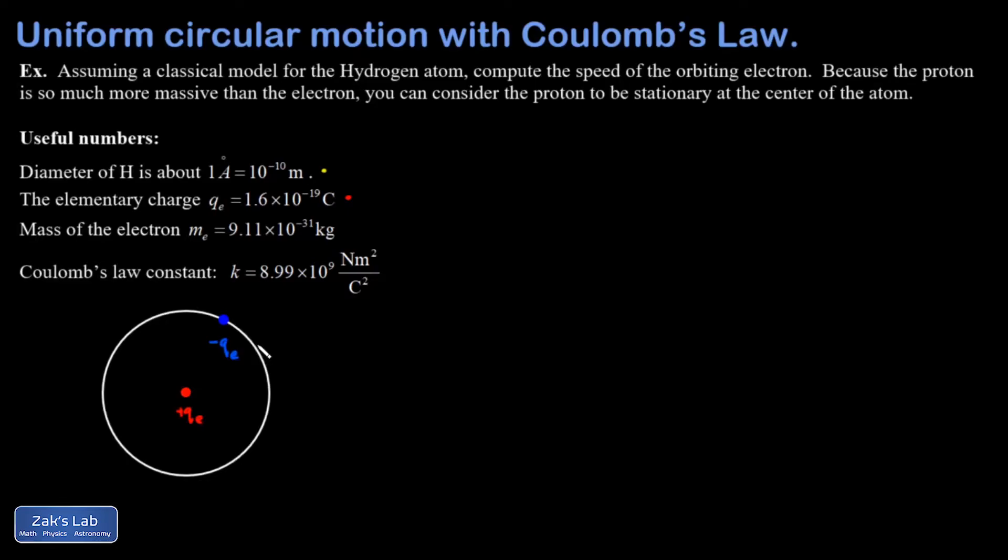Because the proton is positive and the electron is negative, the force between them is of course attractive and the magnitude of that force is given by Coulomb's law and it points to the center of curvature, which is good because we have a circular motion problem. That force is going to cause the electron to accelerate to the center of curvature. In other words, it's a centripetal acceleration that curves the path of the electron into a circle.